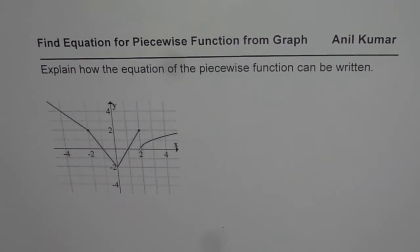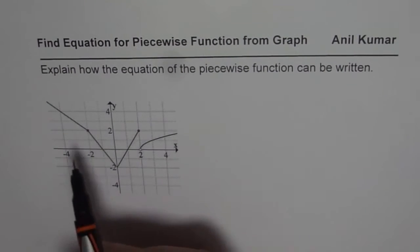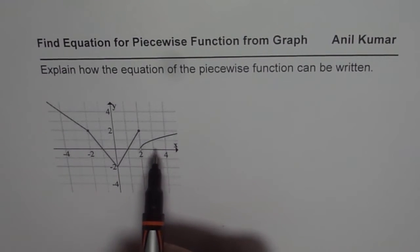So let's follow a method so that we can understand and write equation of similar piecewise functions. Now when you observe this function you could clearly see that there are 2 or 3 pieces. You could say 3 or 4 pieces.